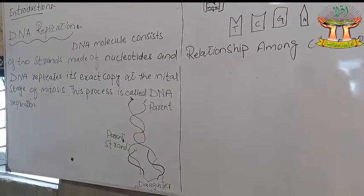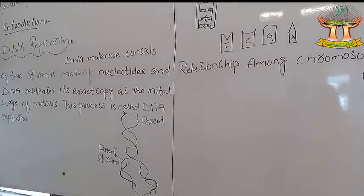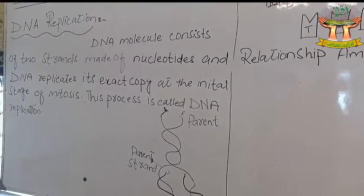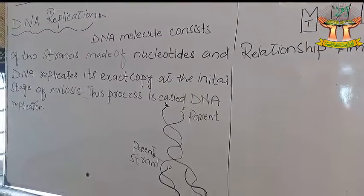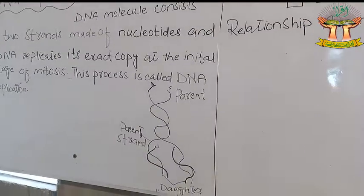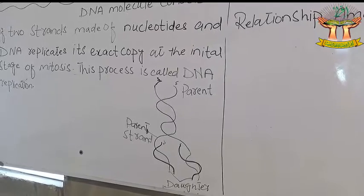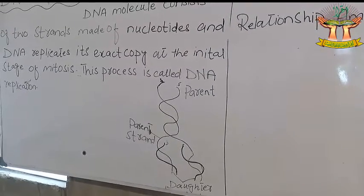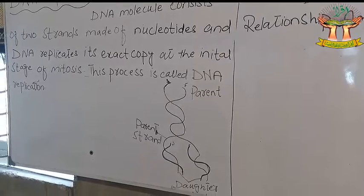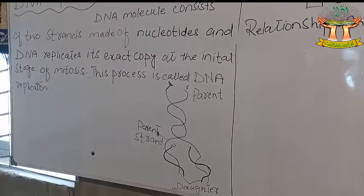The initial stage of DNA replication is that the DNA molecule unwinds its twist and the two strands of DNA are separated from each other. So in the initial stage, the DNA molecule opens its twist and the strands are separated.